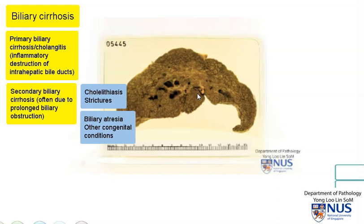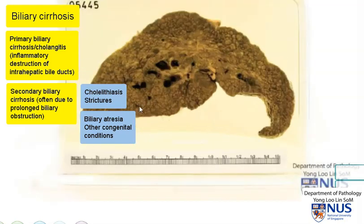What happens is that there is obstruction of the flow of bile, and therefore there's cholestasis within the liver parenchyma, and hence this greenish discolouration. The bile ducts themselves will usually have some degree of inflammation. There will be damage and fibrosis, and eventually scarring throughout the liver, and nodular regeneration of hepatocytes.